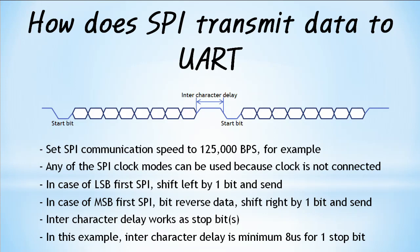There are two ways to transmit no parity, 7 data bits, and 1 stop bit data using SPI that can transmit 8-bit data. The first is to send the start bit and 7 data bits in the 8-bit SPI data, and use the inter-character delay for the stop bit. The second is to send the start bit and 7 data bits in the SPI data, then send 0xFF — in this case the stop bit covers 8 data bits.